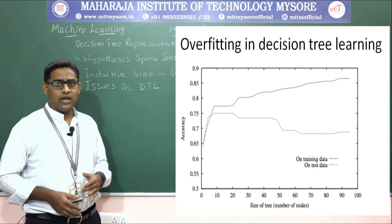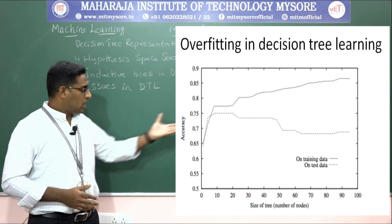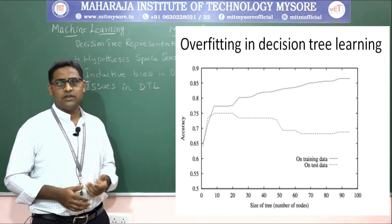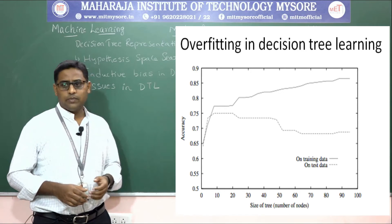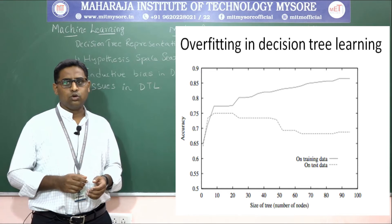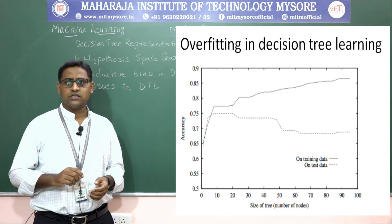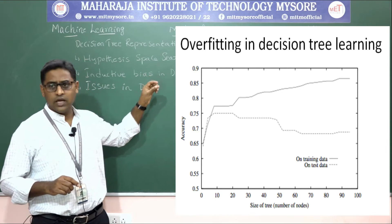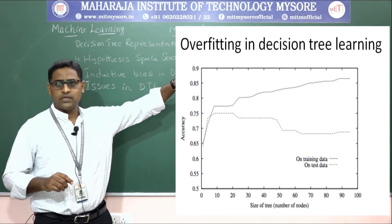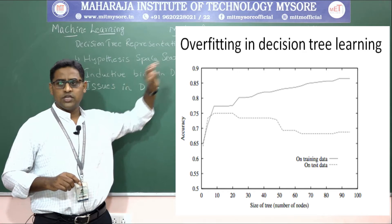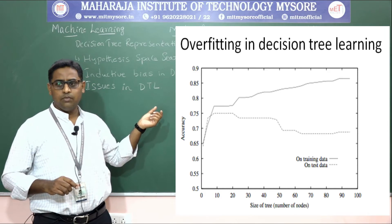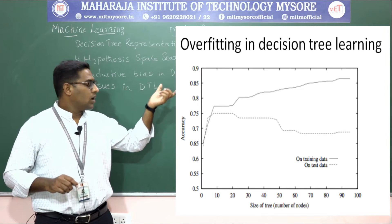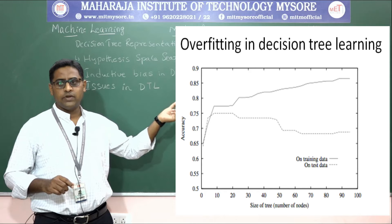Graphically, overfitting is represented with the x-axis showing the size of the tree (number of nodes) and the y-axis showing accuracy. The training data curve shows good accuracy as the tree grows, but when tested on the test data set, accuracy drops for overfitted models — shown by the dotted line.